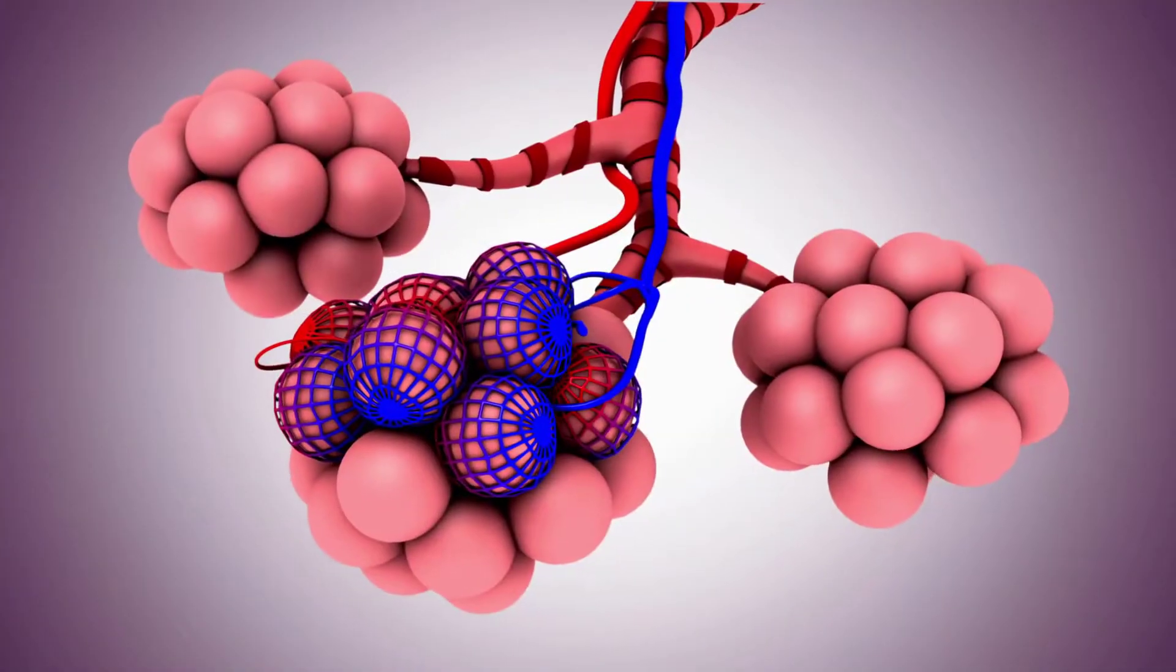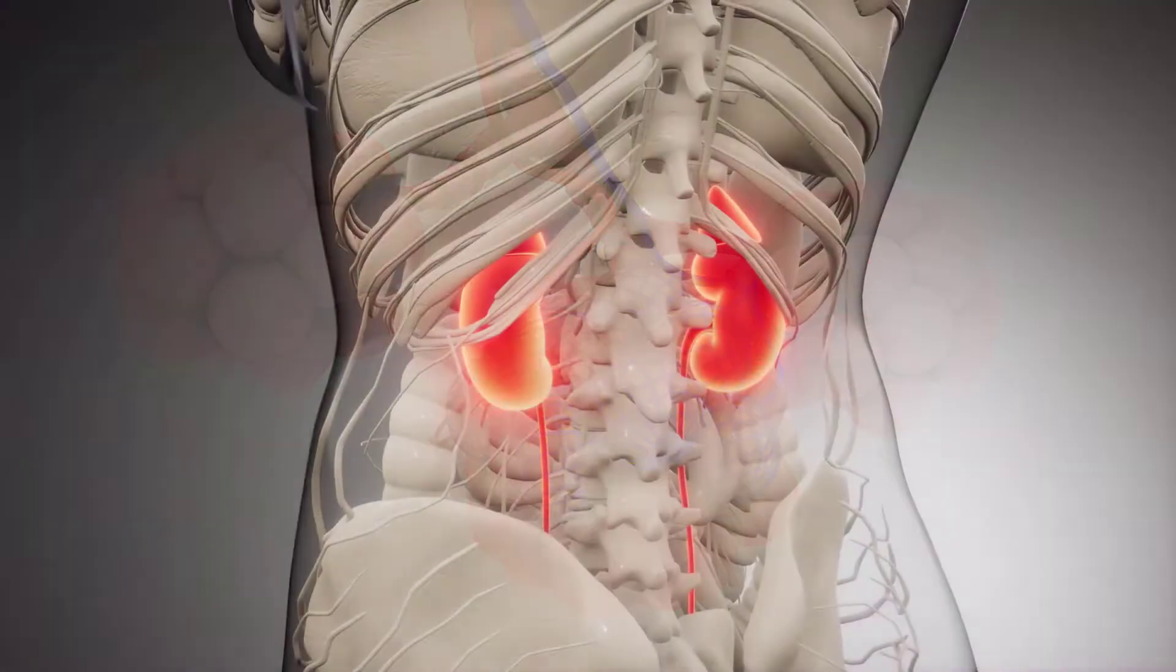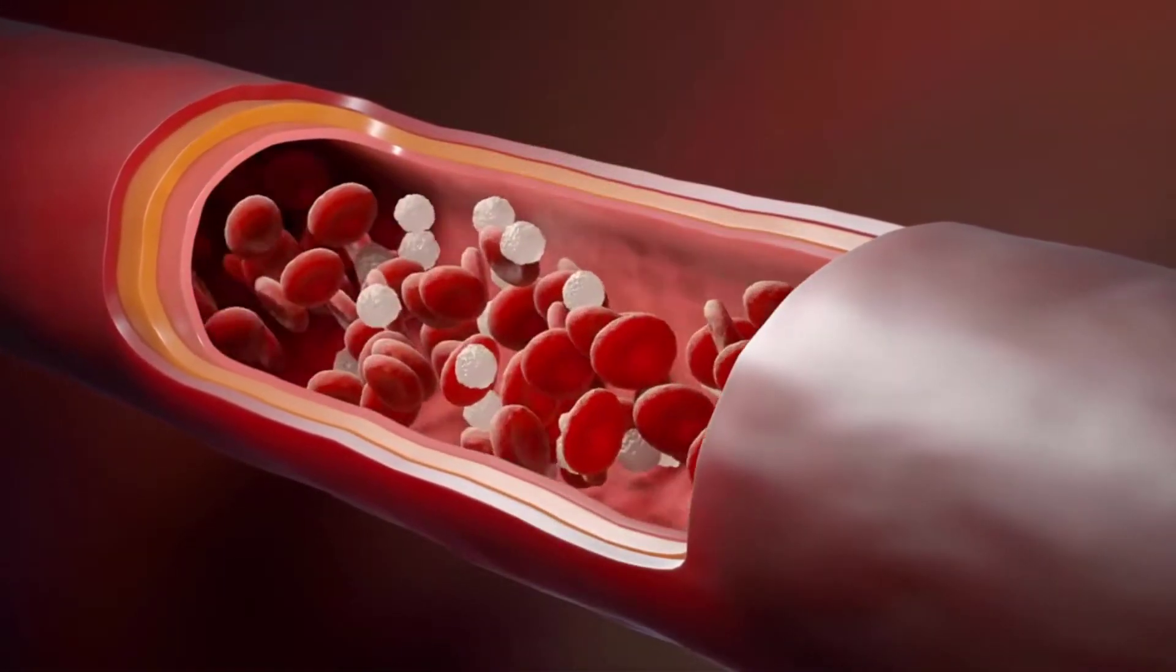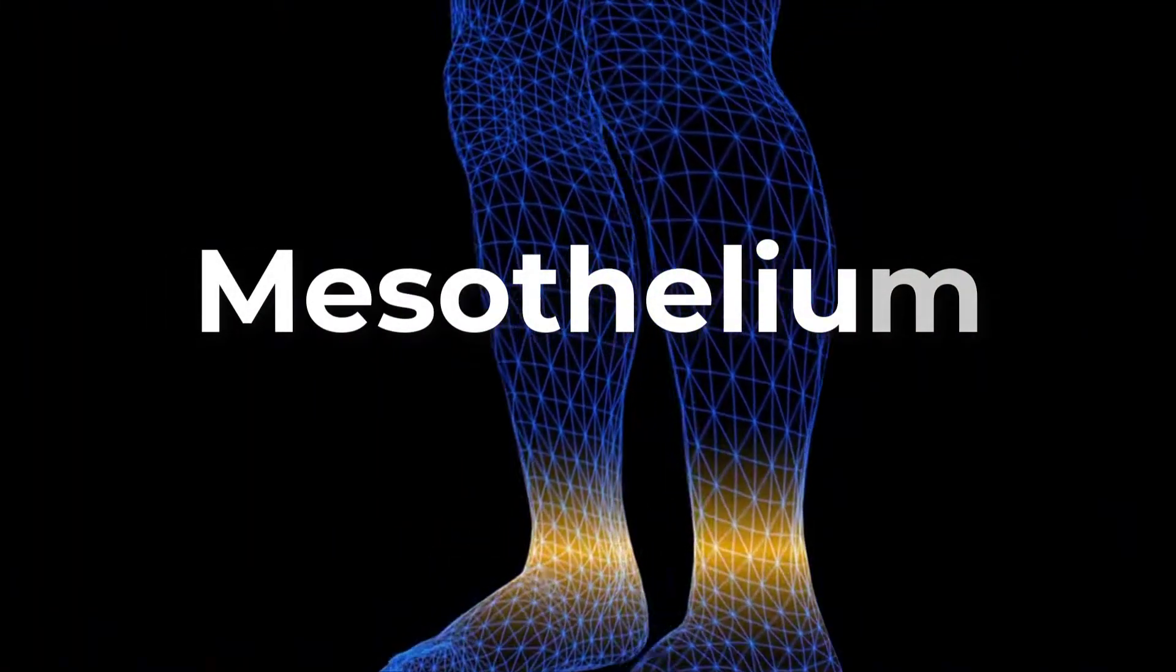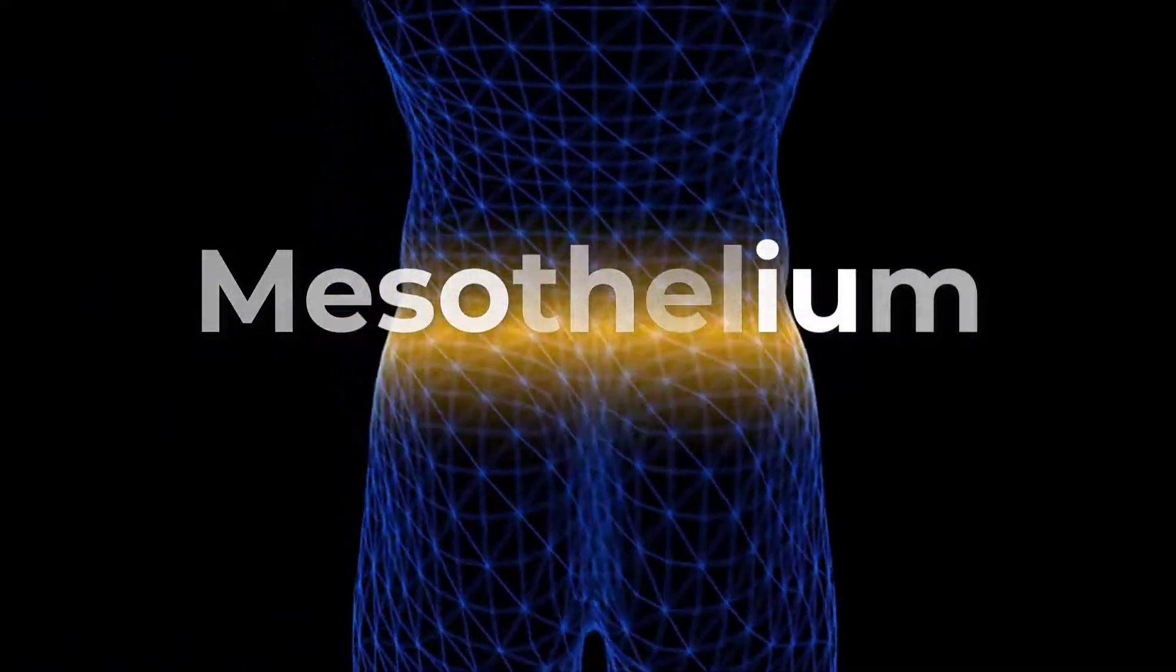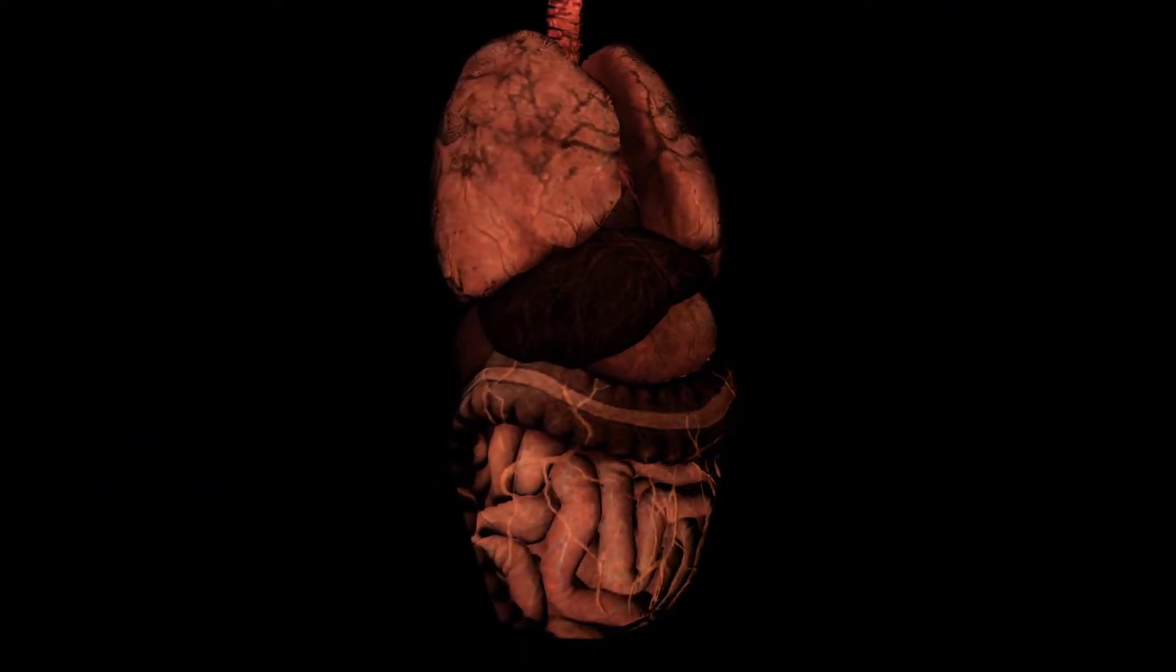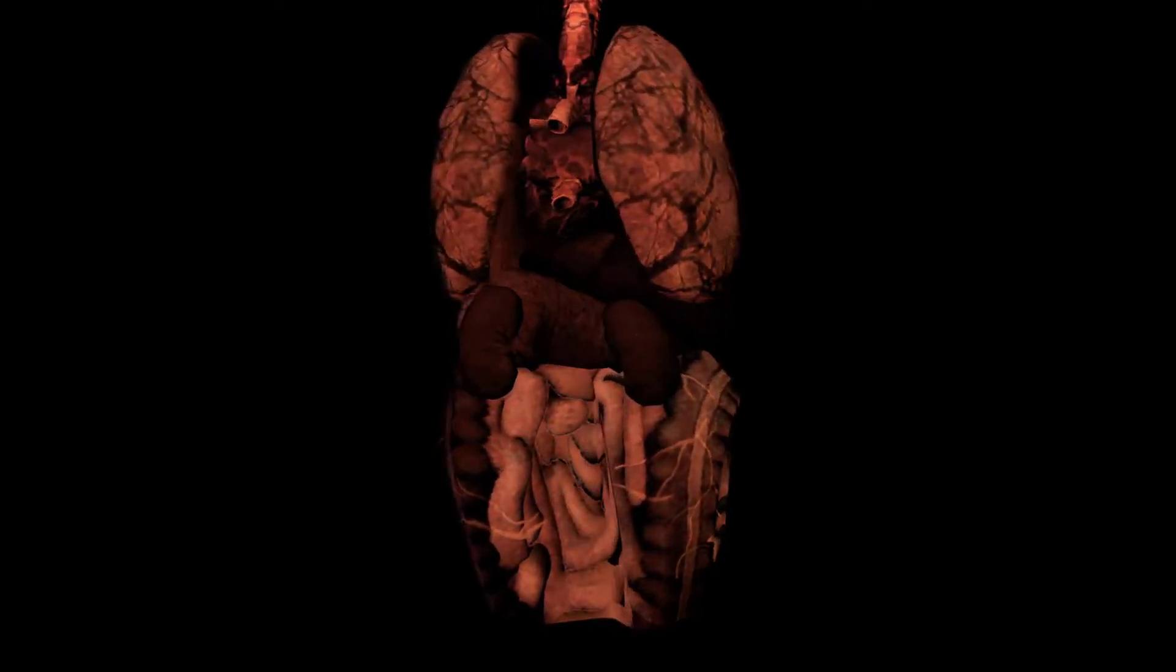For example, the alveoli of the lungs where gases diffuse, segments of kidney tubules, and the lining of capillaries are all made up of simple squamous epithelial tissue. The mesothelium is a simple squamous epithelium that forms the surface layer of the serous membranes that line the body cavities and internal organs. Mesothelial cells are squamous epithelial cells that secrete fluid that lubricates the mesothelium.